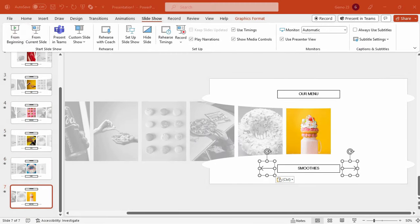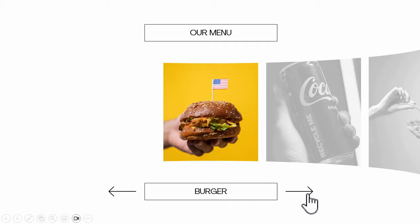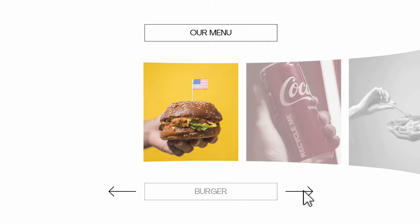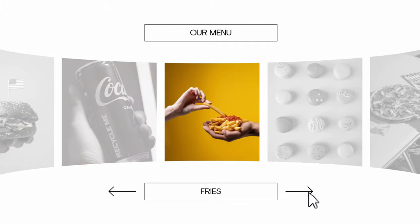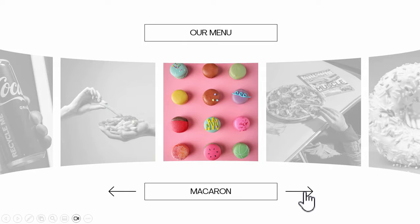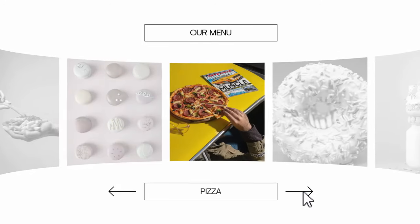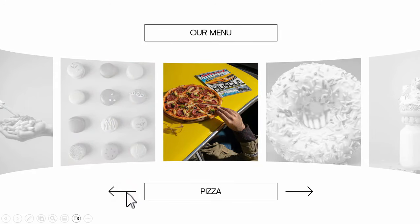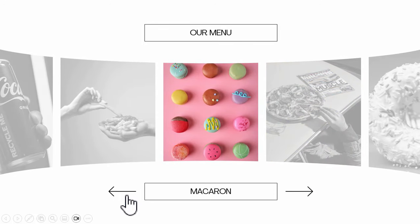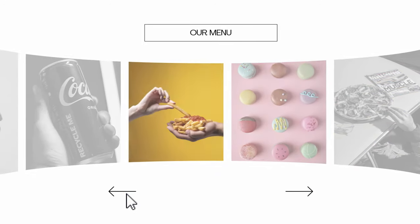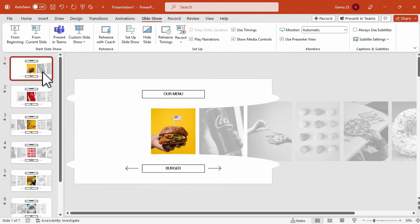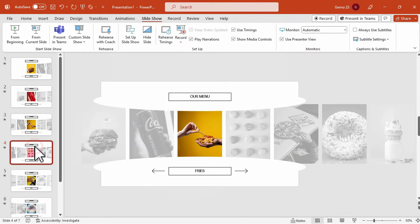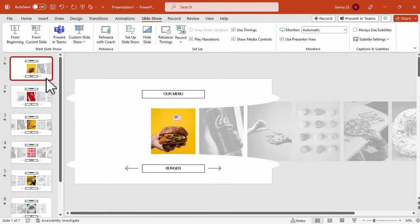Here is the progress so far for this tutorial. Once I click the arrow icon facing right, it will go to the next image. And once we click the arrow icon facing left, it will go to the previous image.